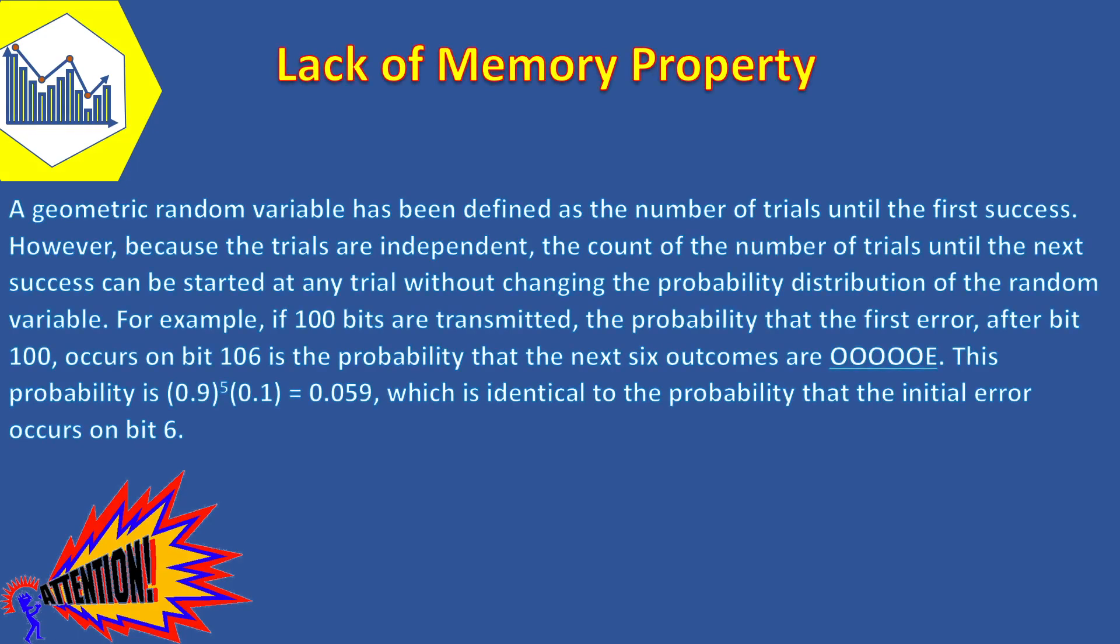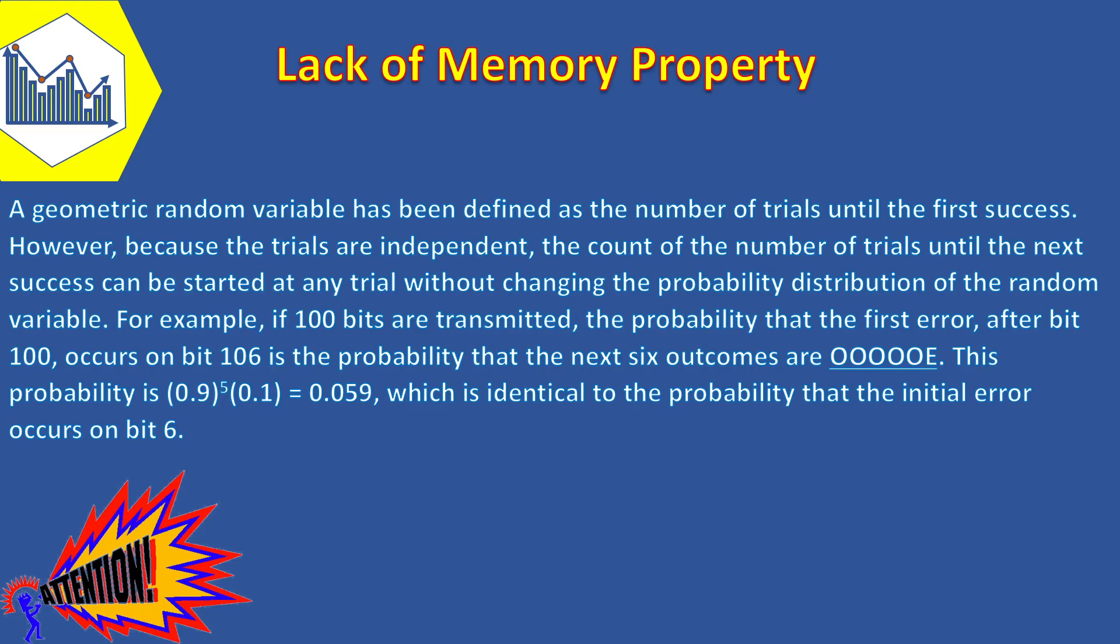But before wrapping up the video, please attend to this point. A geometric random variable has been defined as the number of trials until the first success. However, because the trials are independent, the count of the number of trials until the next success can be started at any trial without changing the probability distribution of the random variable.